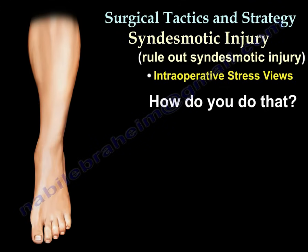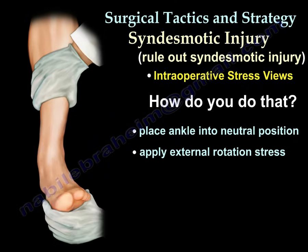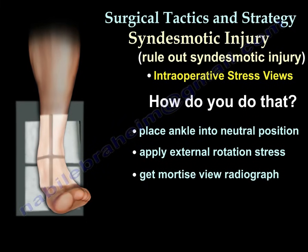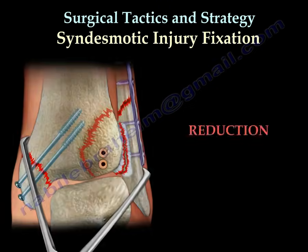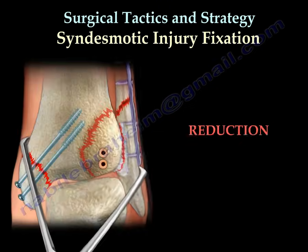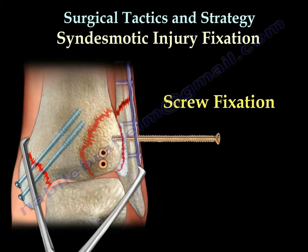How do you do the stress views? You place the ankle in neutral position, you apply external rotation stress, and you get a mortise view through fluoroscopy. Then you reduce the syndesmosis with a clamp, make sure the foot is in dorsiflexion, and you fix the syndesmosis with a screw.